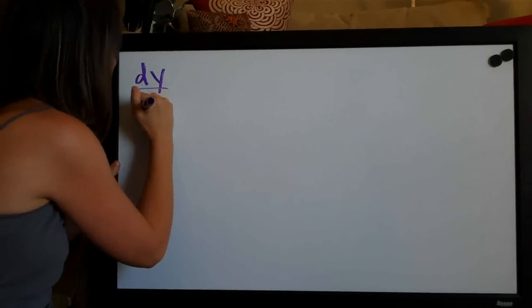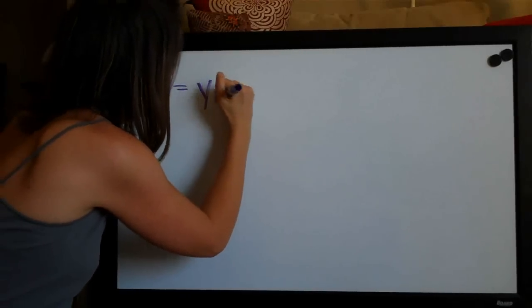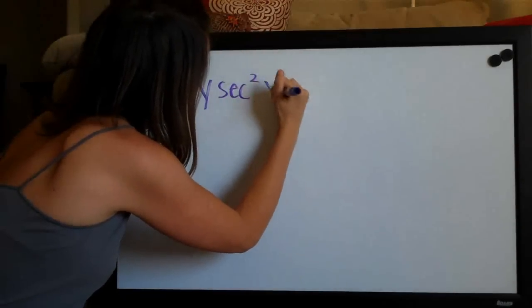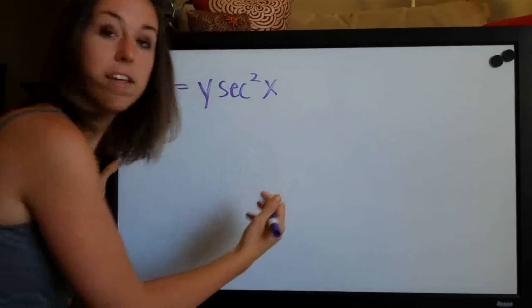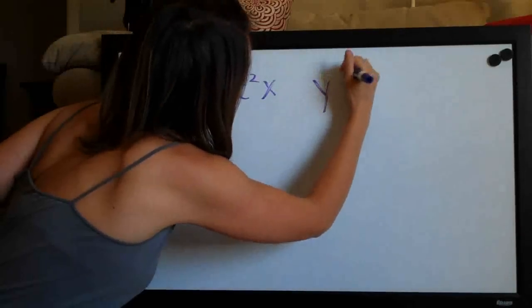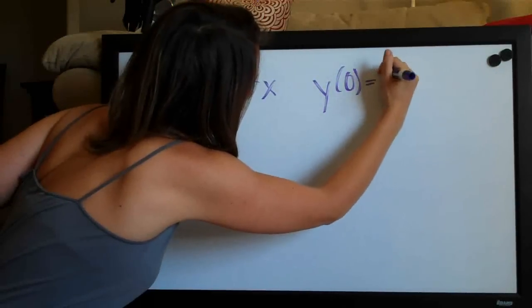So the problem we're given is dy over dx equals y times secant squared of x and the initial condition is y of zero equals five.